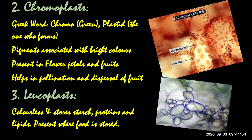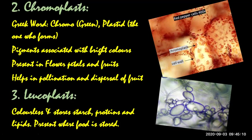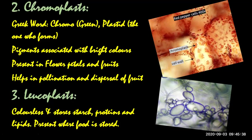Similarly, there is dispersal of pollen grains. You must have studied pollination in earlier classes — self-pollination and cross-pollination. Pollination is a process in which pollen grains are dispersed. So basically, chromoplasts attract insects and animals for dispersal of pollen grains and dispersal of seeds.